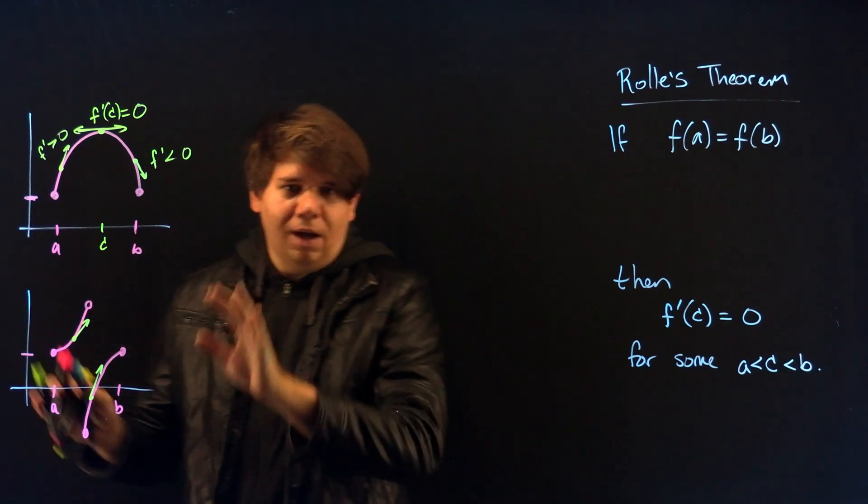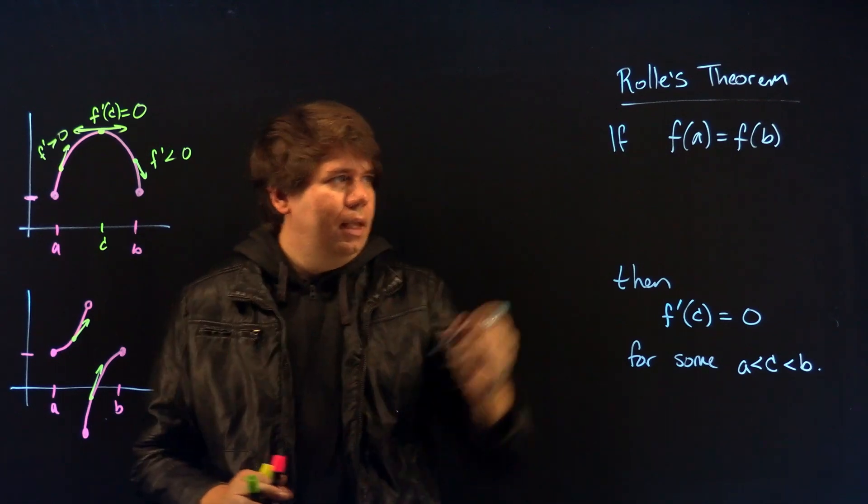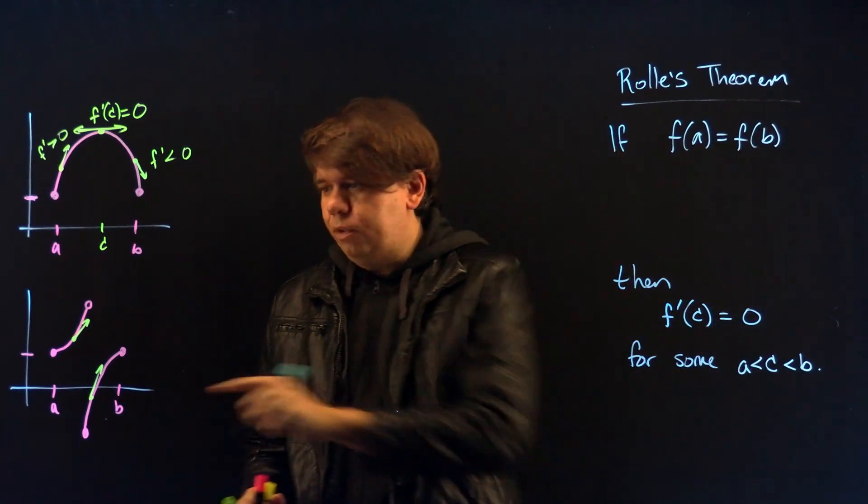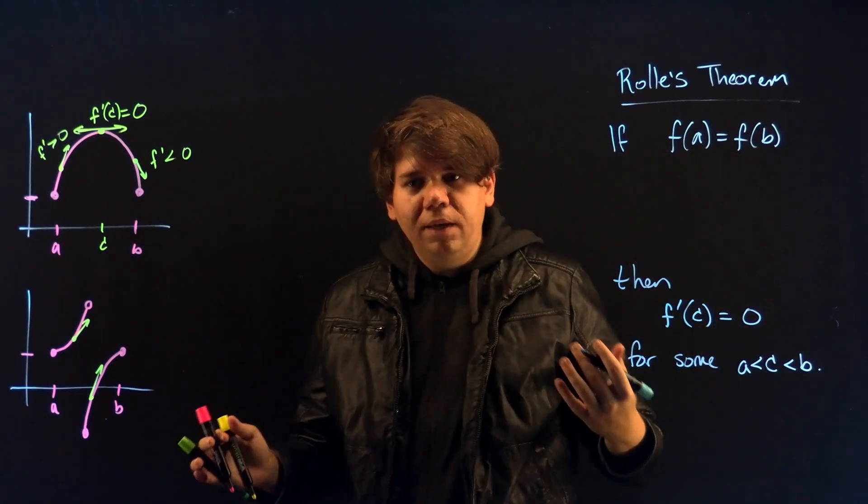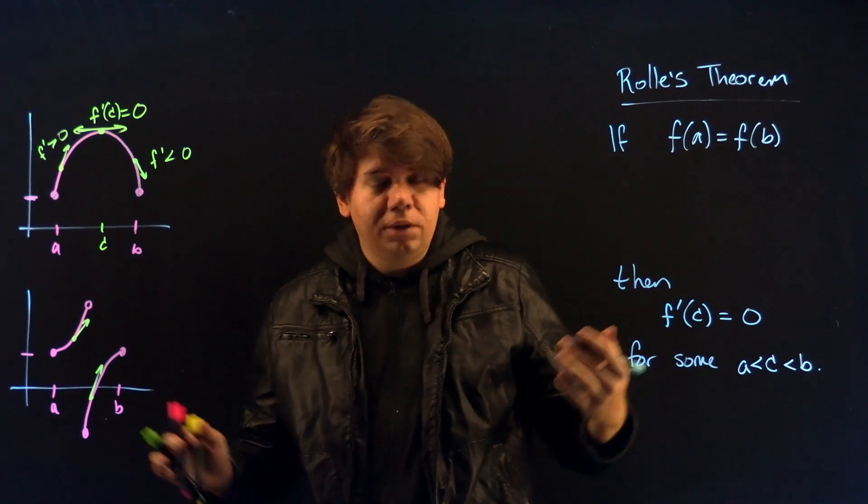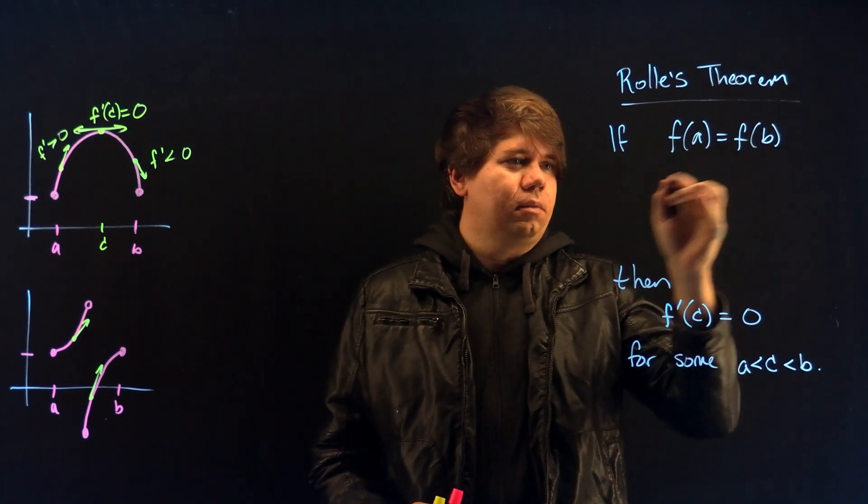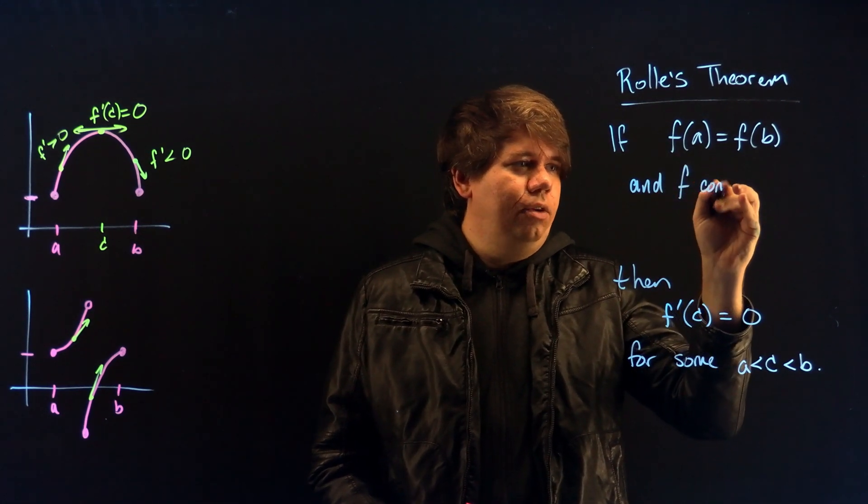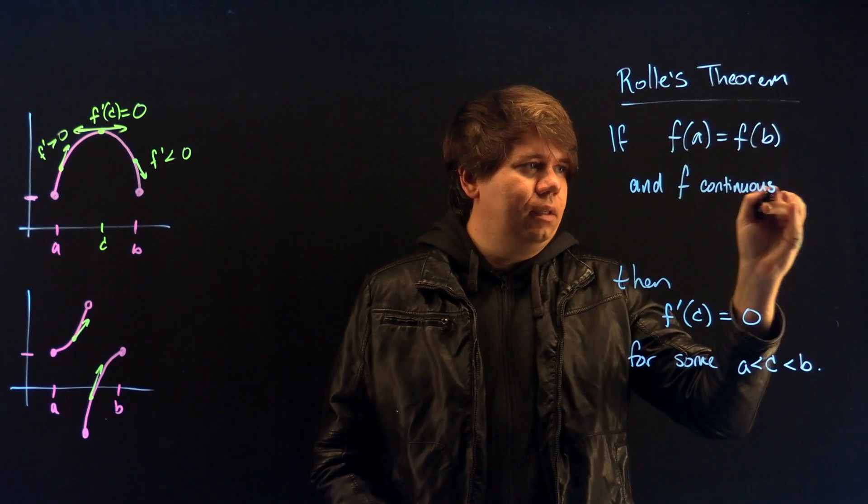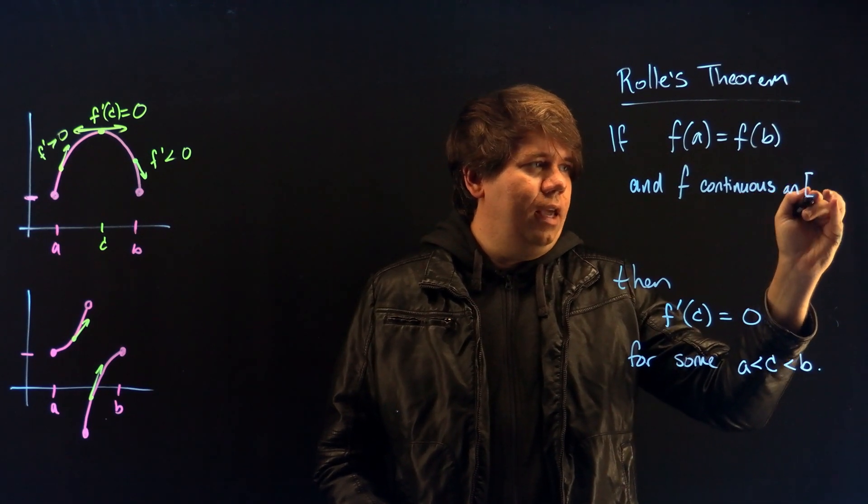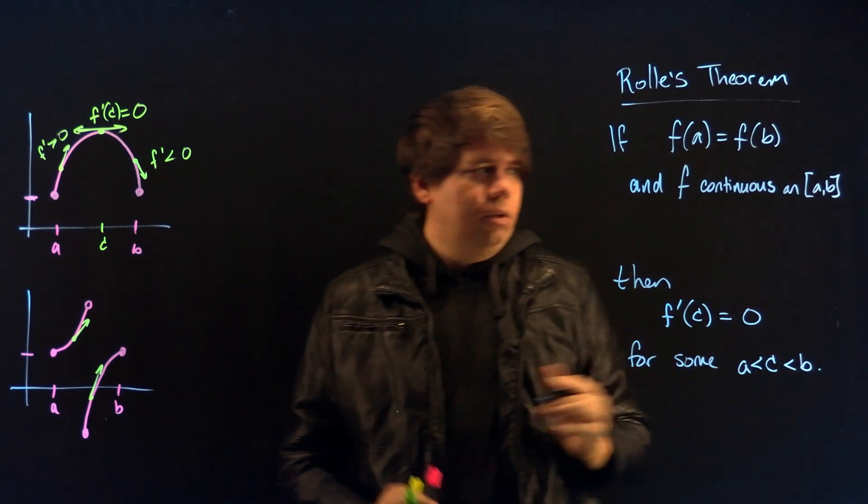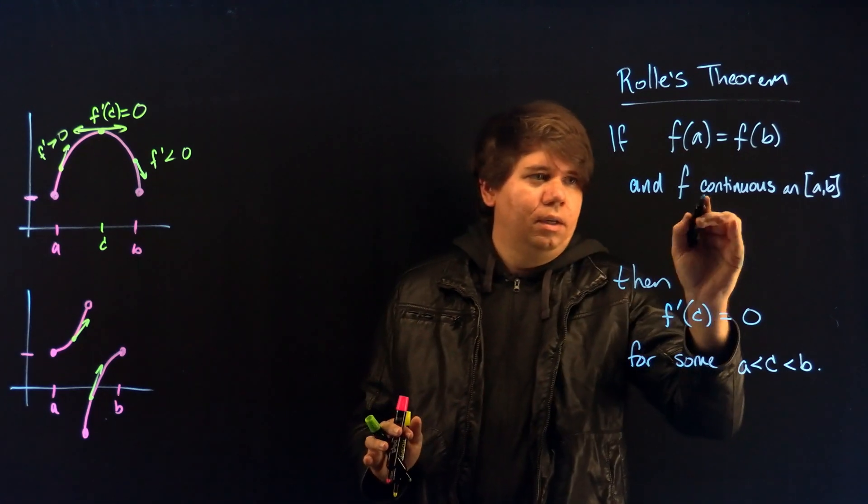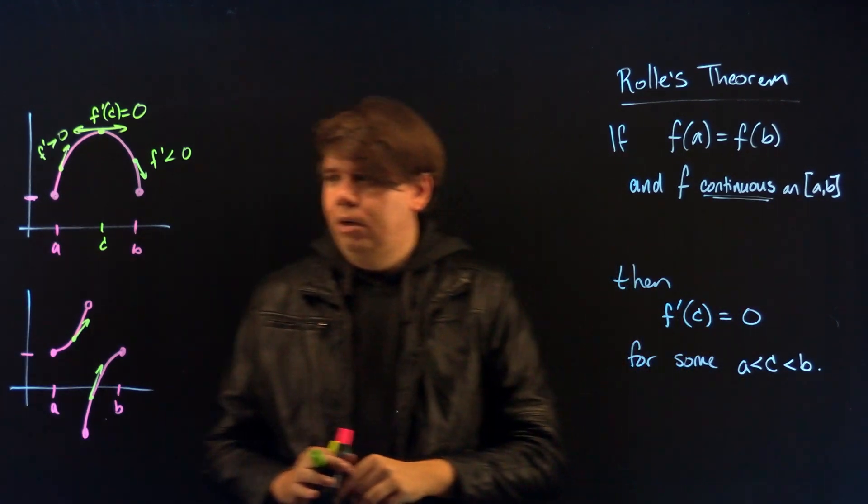Well, if we want to rule out exotic cases like that then we're going to add a condition. We're going to say we don't want to have any jumps. What does it mean to not have any jumps or not to have any holes in the graph? It means that our function should be continuous. Continuous on the interval AB. So no jumps, no holes. Continuous.